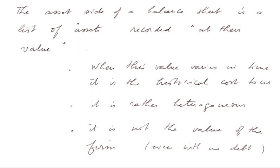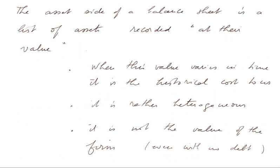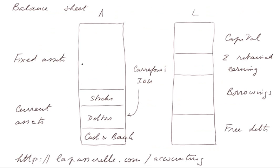The asset side of a balance sheet is just a list of assets recorded at what we call their value. When this value varies in time, it is the historical cost that is recorded. This asset side is rather heterogeneous — a sort of list — and it is not the value of the firm. Even if the firm has no external liabilities or debt, the value of a firm is something different from just the list of its assets. We shall see that in this course in finance.